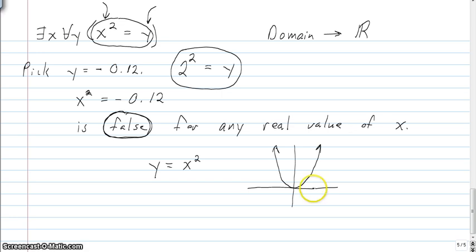...does there exist an x, right? So could we select some specific x value? Could we select some specific x value where this equation is true, x squared equals y, for all values of y?